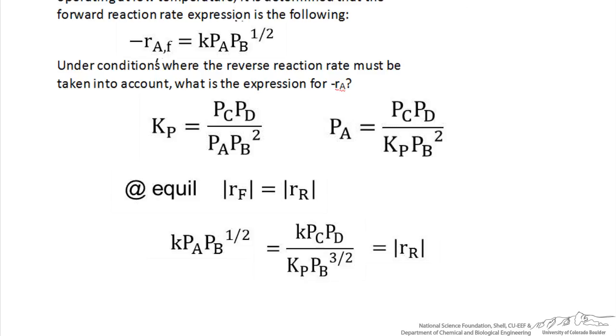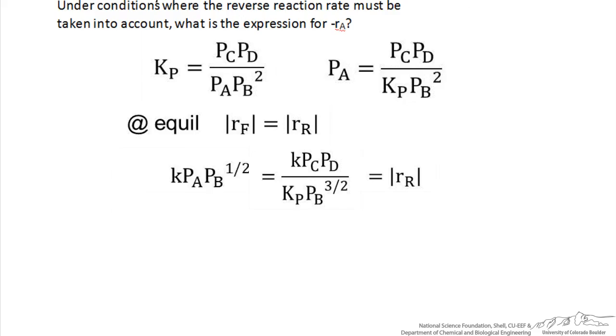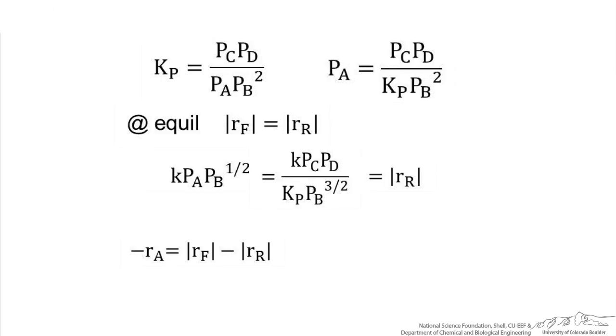And so now we can write the overall rate expression, which is equal to the rate of the forward process minus the rate of the reverse process. And if we collect these terms together, we end up with this expression as follows.